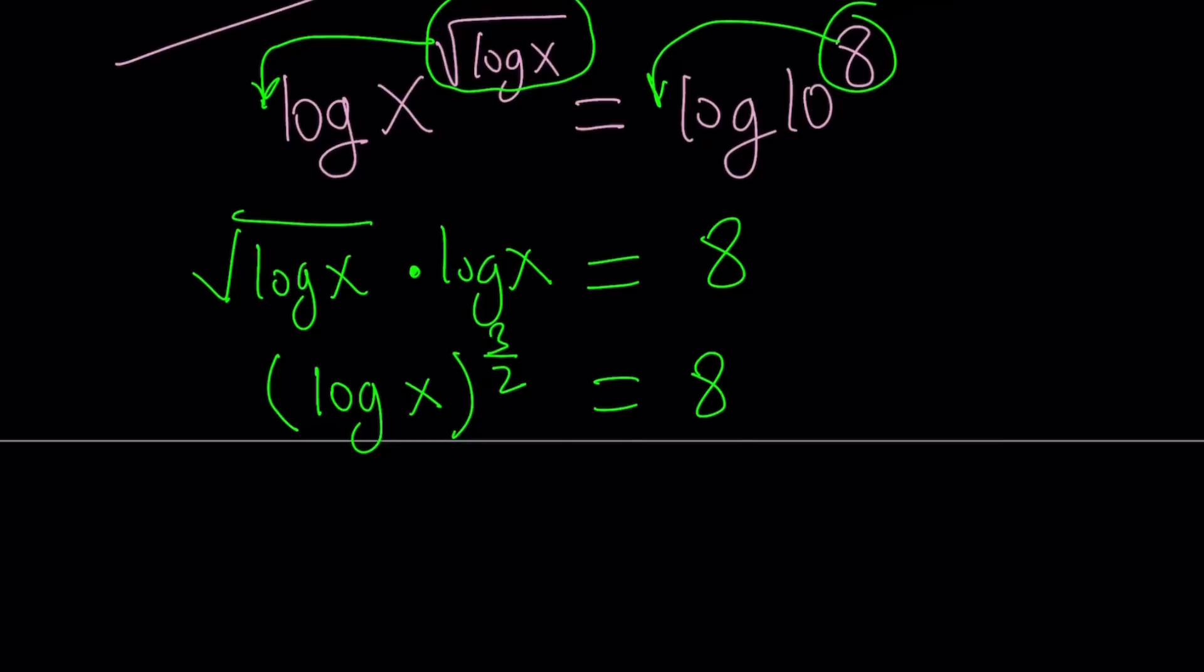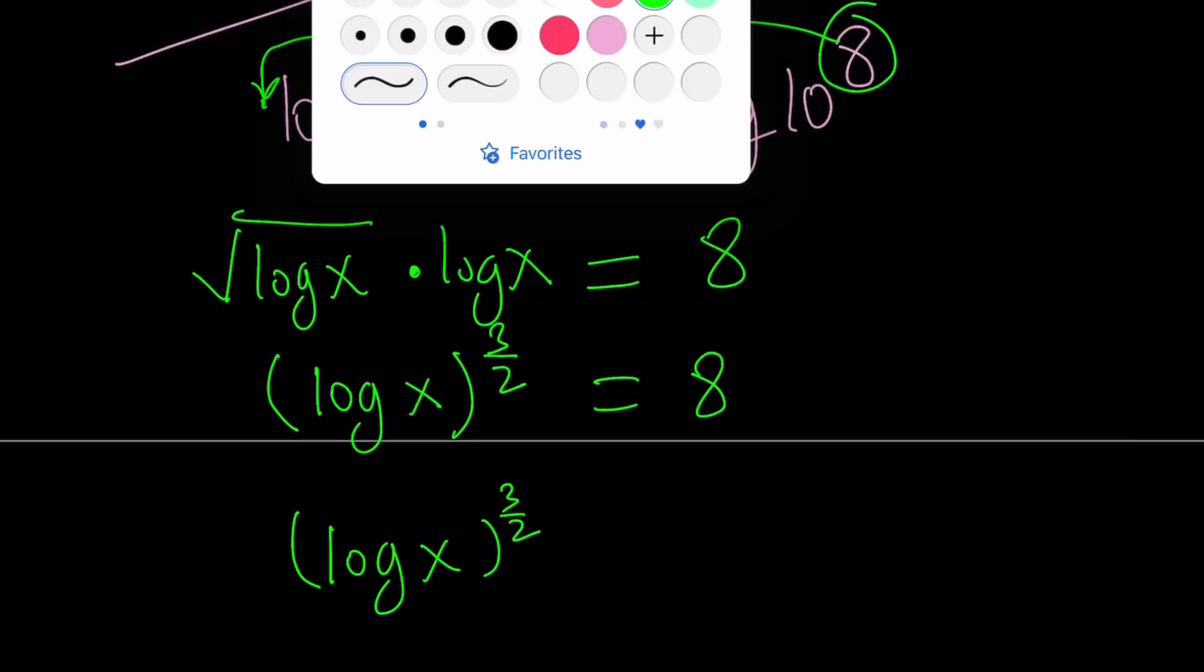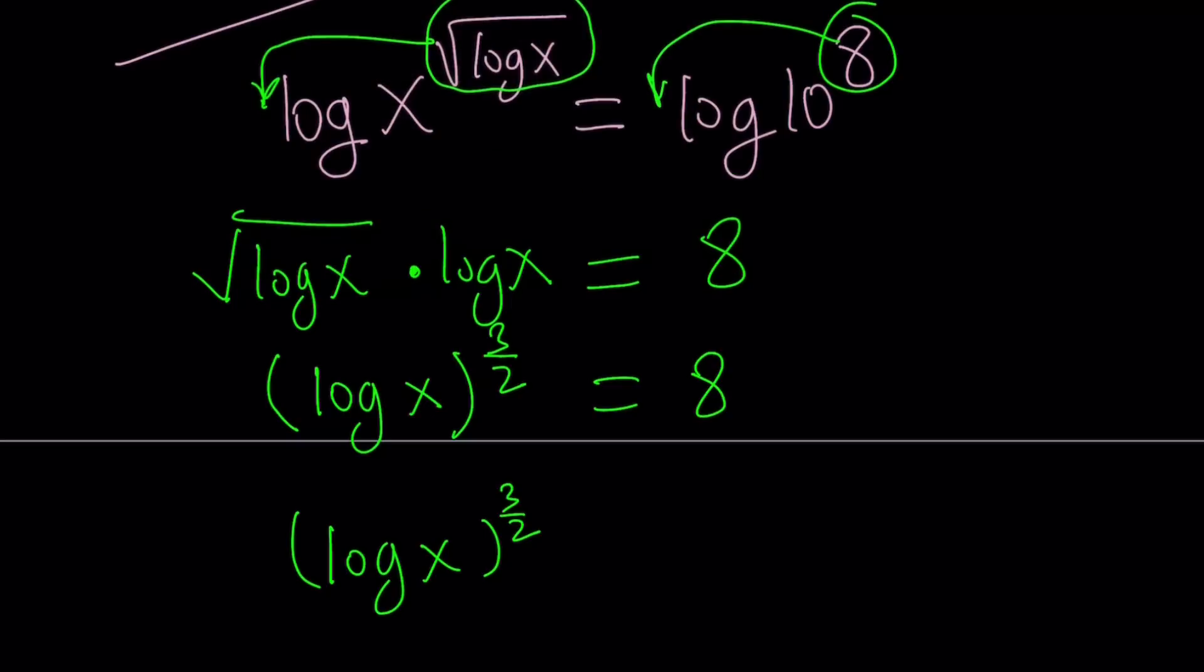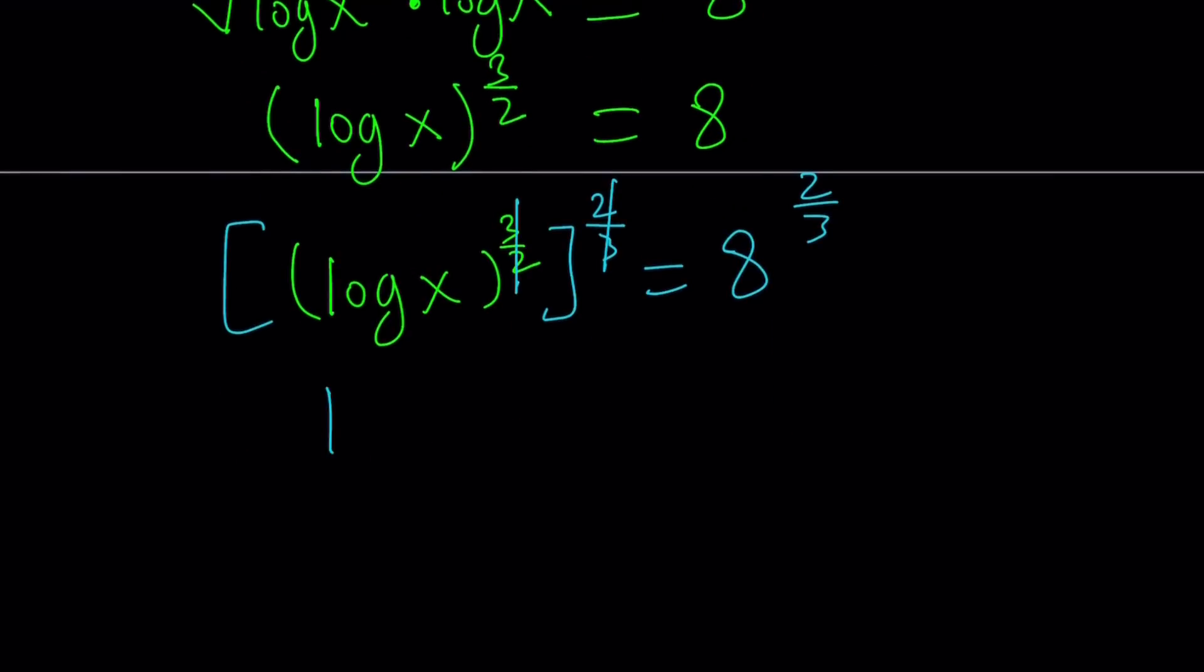First of all, we have a power on the left-hand side. So let's go ahead and get rid of that. Why don't we just go ahead and take this power and raise it to another power, which is going to be 2 thirds, and do the same thing on the right-hand side. Now, when you multiply a power by another power, or when you raise a power to another power, these two are multiplying, and their product is 1. And from here, we get the following: log x equals 8 to the power 2 thirds.